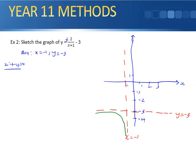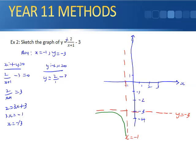For the x-intercept, set y = 0: 2/(x + 1) - 3 = 0, so 2/(x + 1) = 3, giving 2 = 3x + 3, so x = -1/3. For the y-intercept, set x = 0: y = 2/1 - 3 = -1. The graph crosses at (-1/3, 0) and (0, -1). The curve follows the asymptotes and passes through these points — this is y = 2/(x + 1) - 3.